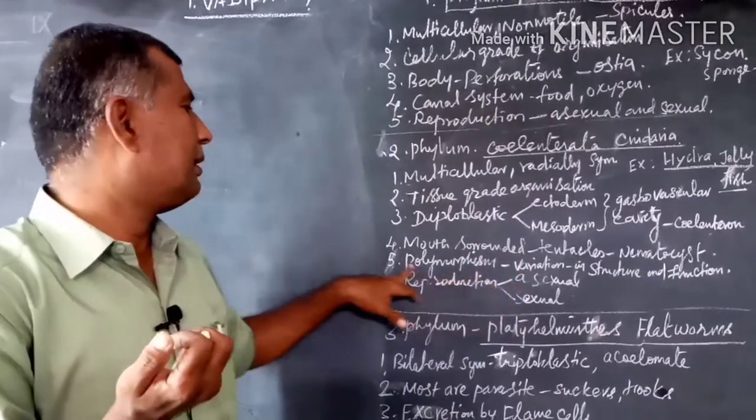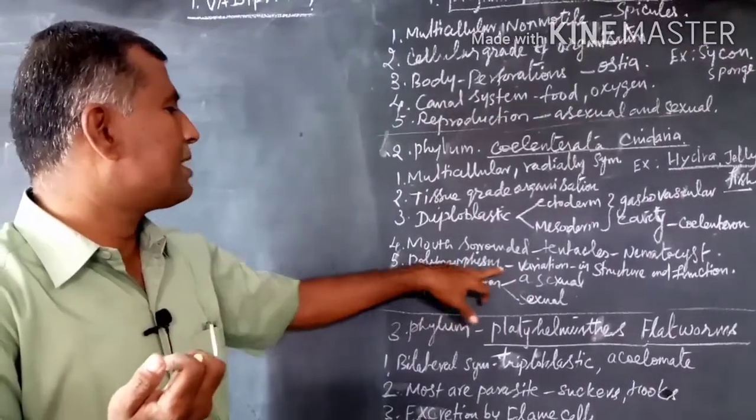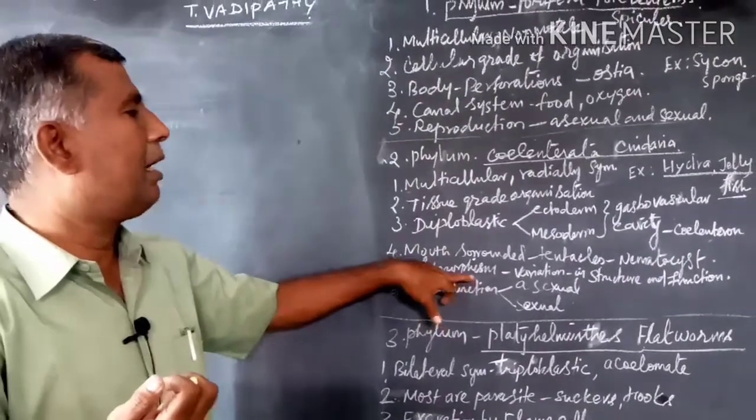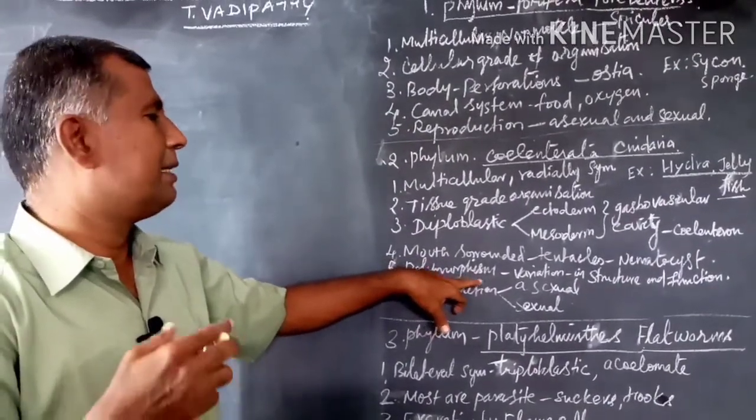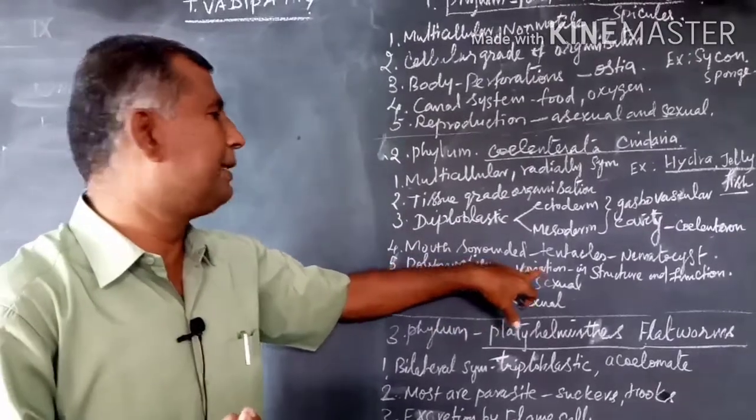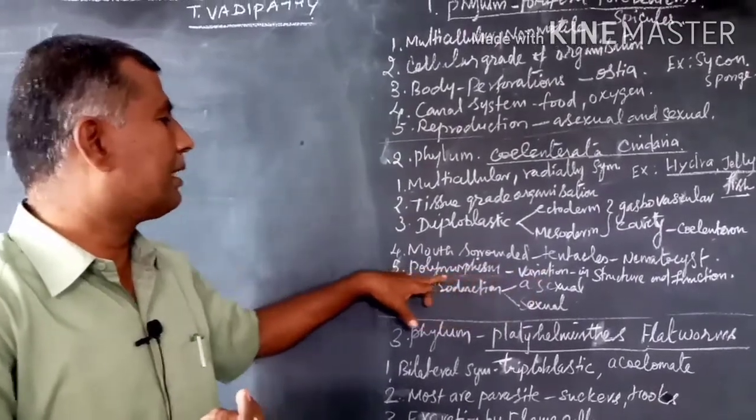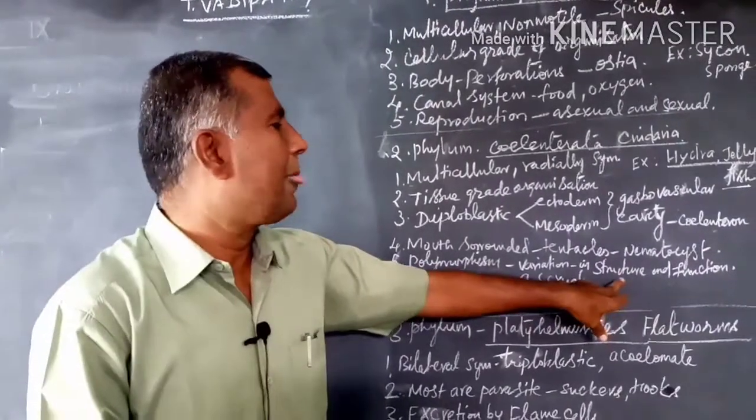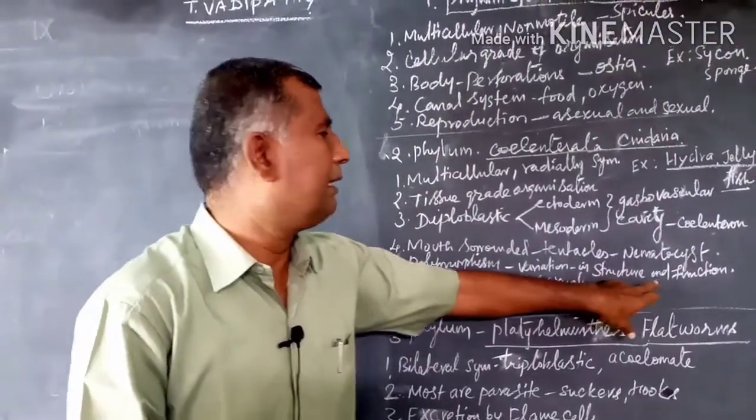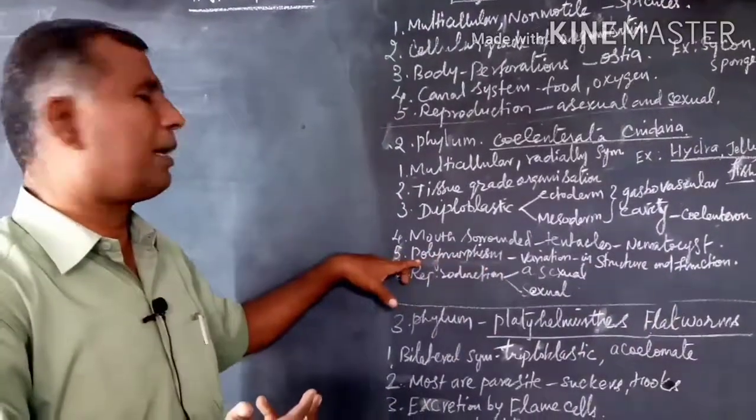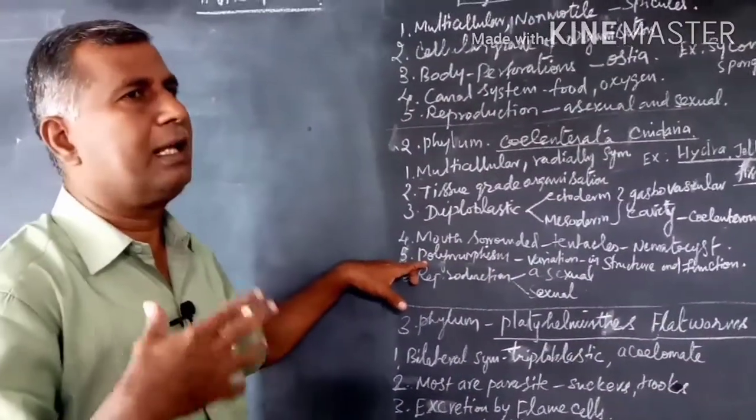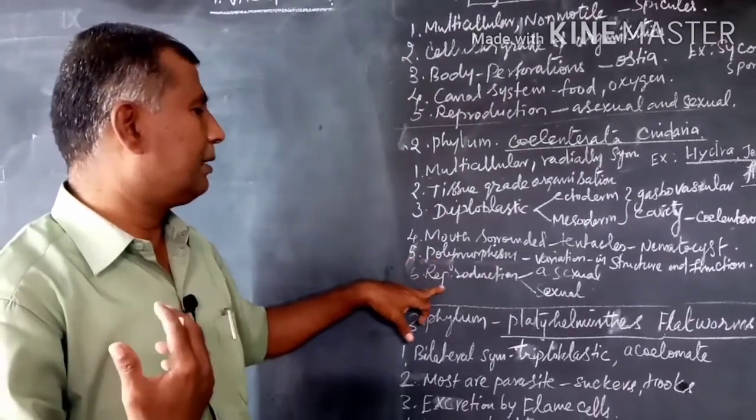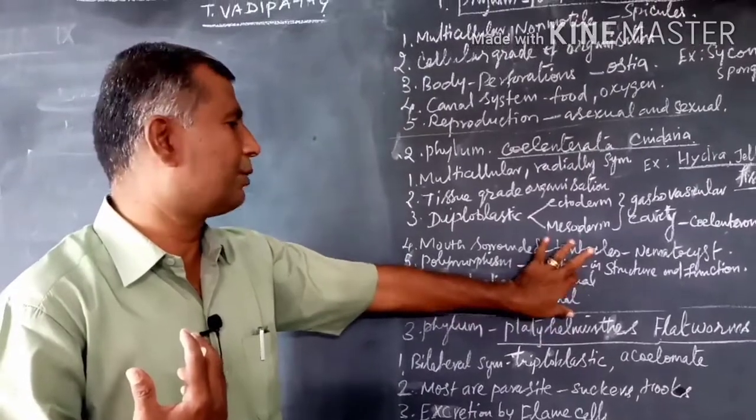A special character of Coelenterata is polymorphism. This means the same species exhibits morphologically differentiated shapes. They will be different in structure and function – this is called polymorphism, morphologically differentiated into many forms. Reproduction is exhibited by both asexual and sexual means.